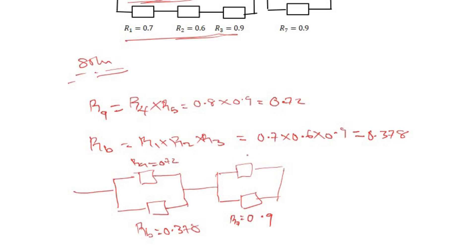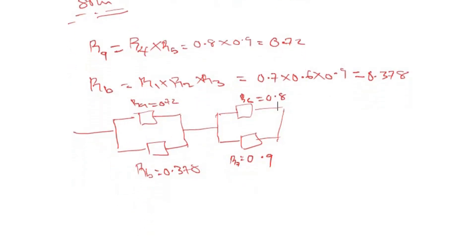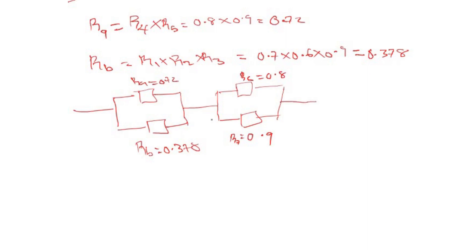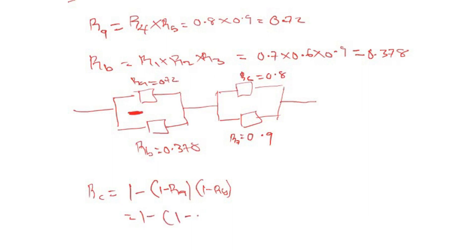Looking at this reduced system carefully, R_A and R_B are in parallel, and R6 and R7 are also in parallel. Let's call R_C the reliability of R_A and R_B in parallel: R_C = 1 − (1 − R_A)(1 − R_B) = 1 − (1 − 0.72)(1 − 0.378).